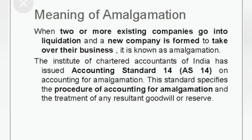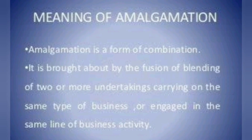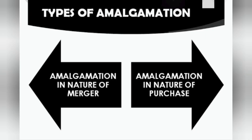What is meant by amalgamation? When two or more existing companies go into liquidation and a new company is formed to take over the business, it is known as amalgamation. The Institute of Chartered Accountants of India has stated that this standard specifies the procedure of accounting for amalgamation and the treatment of any resultant goodwill or reserve. Amalgamation is a form of combination brought about by the fusion or blending of two or more undertakings carrying on the same type of business. There are two types: merger, where two companies liquidate and turn into one, and amalgamation in the nature of purchase, where one company purchases the other.